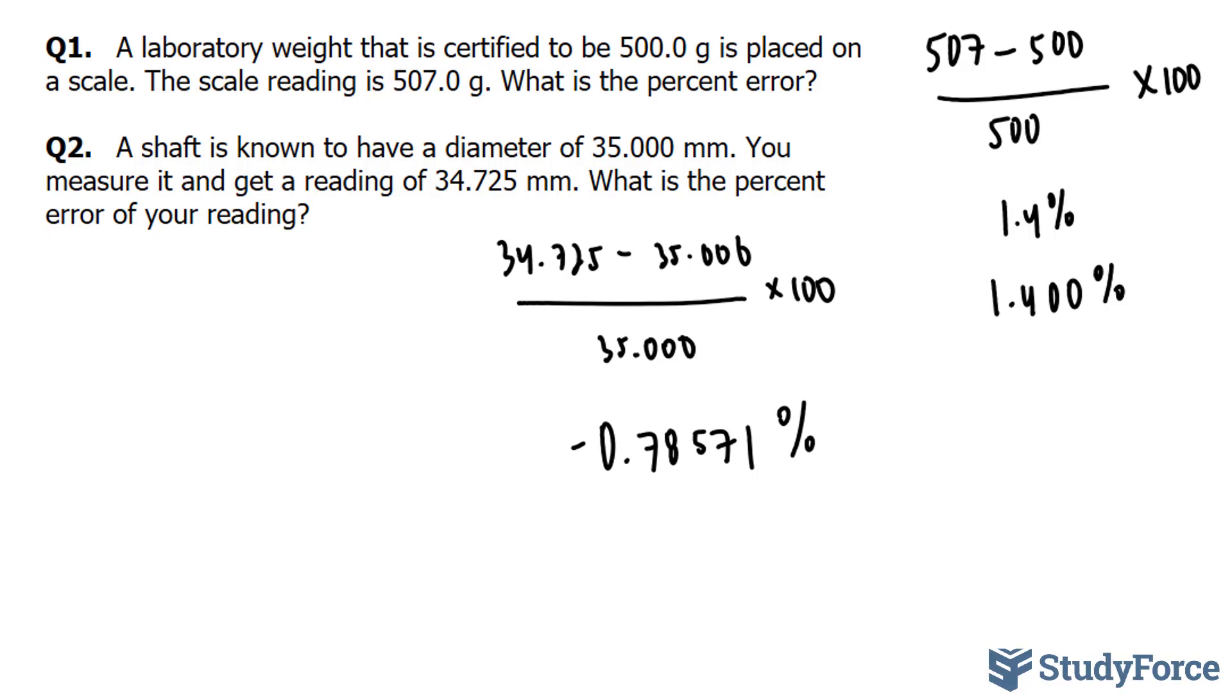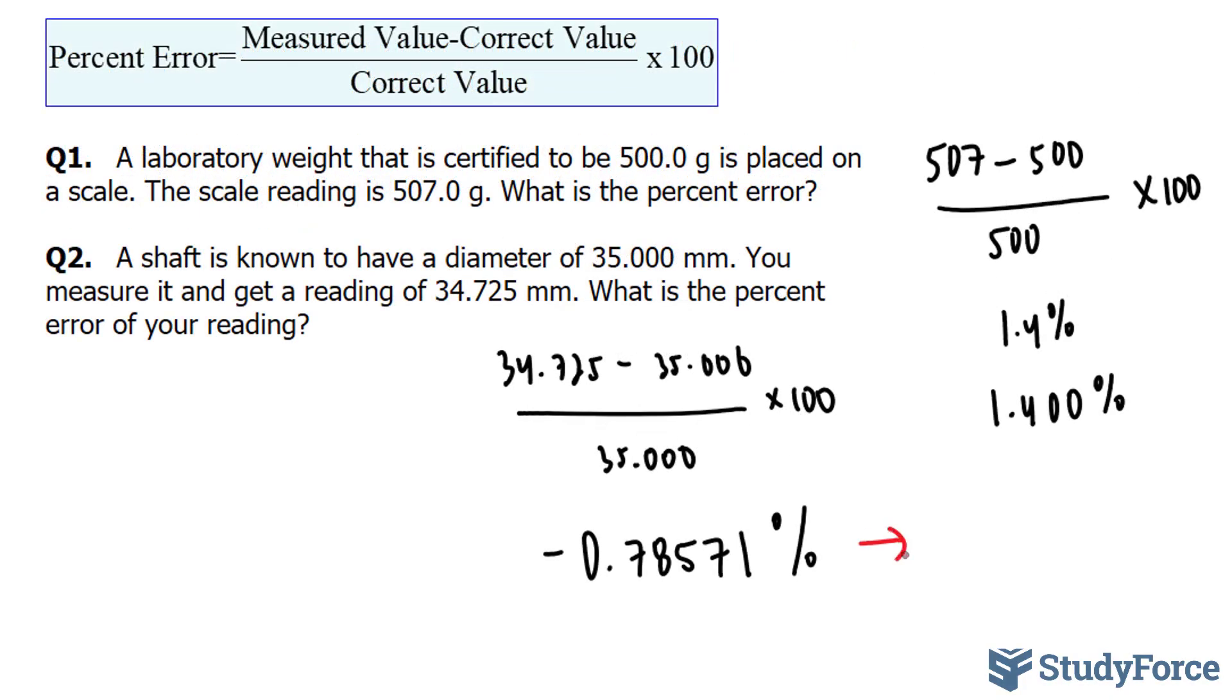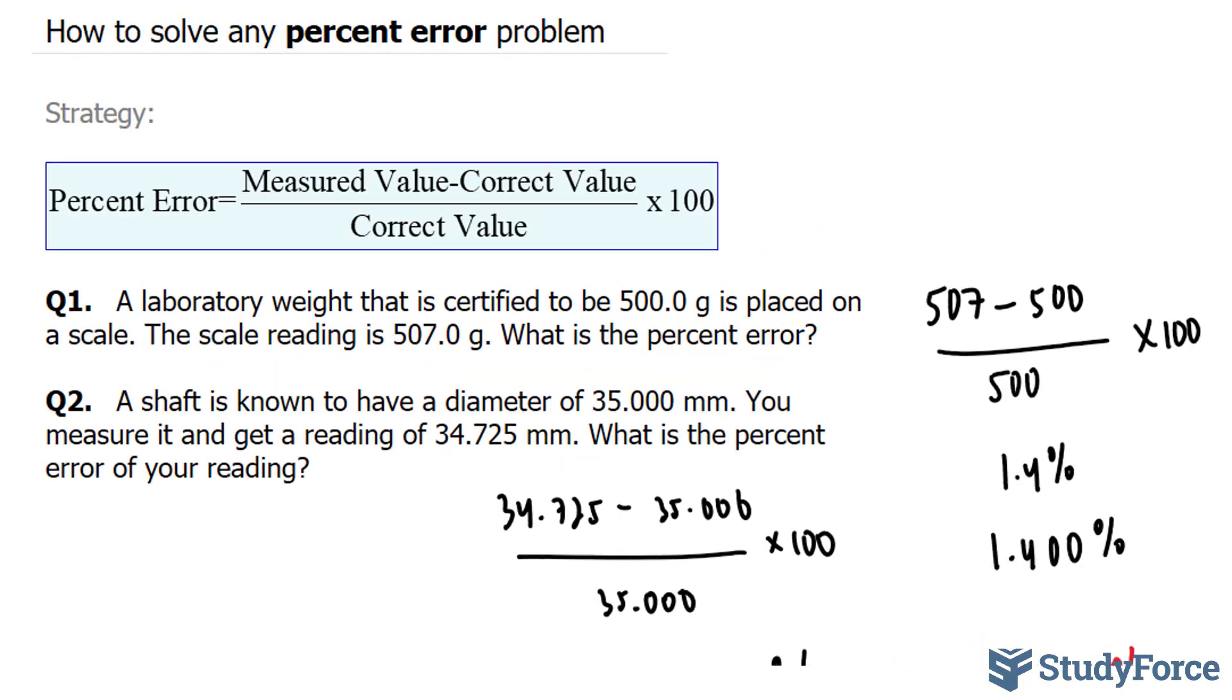Often though, the error is reported as the absolute value of the difference in order to avoid the confusion of a negative error, so the real answer here should be positive 0.78571%. And so there you have it. That is how to solve any percent error problem.